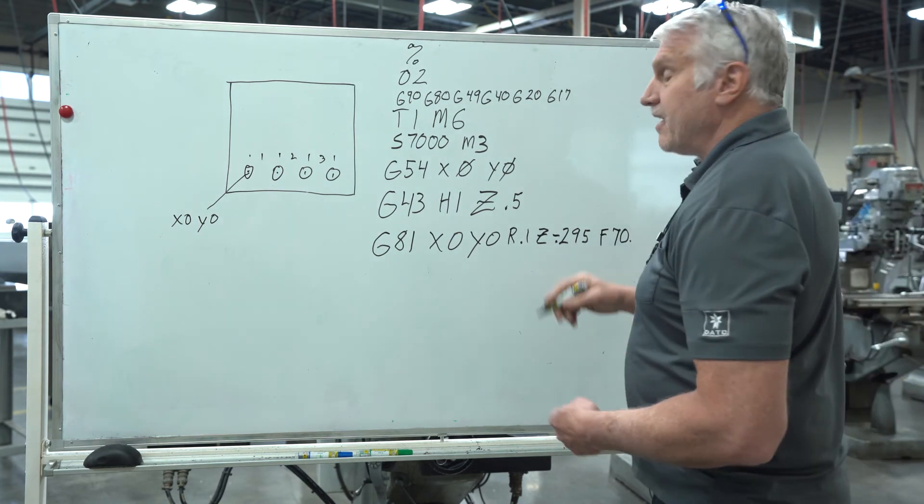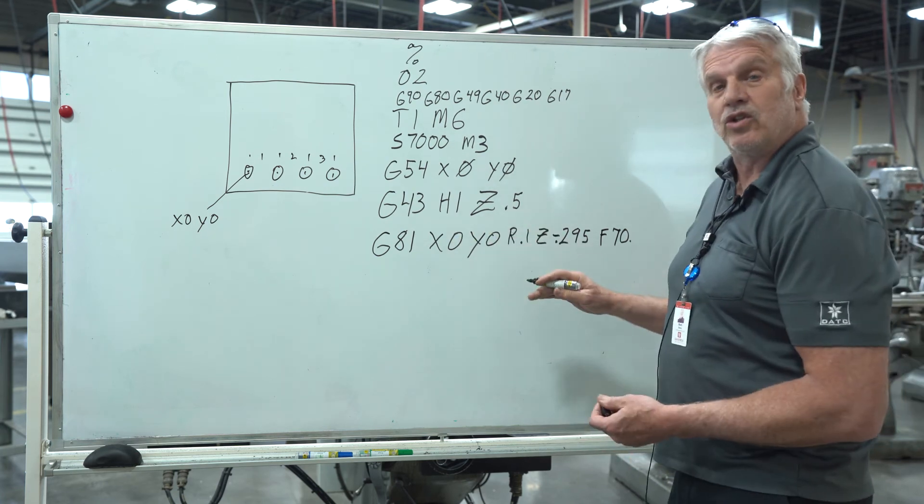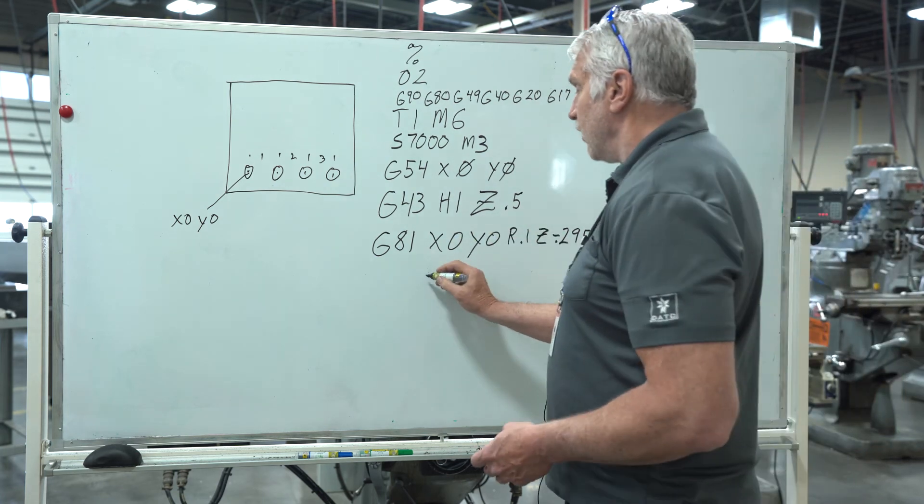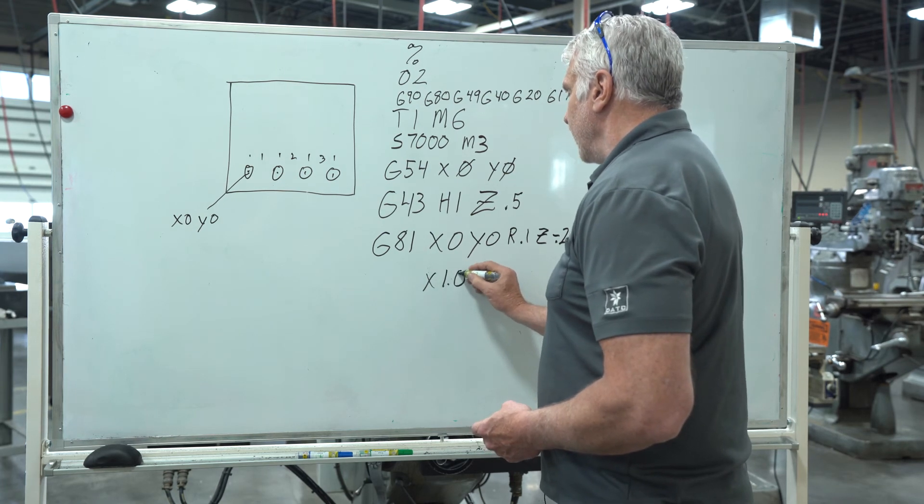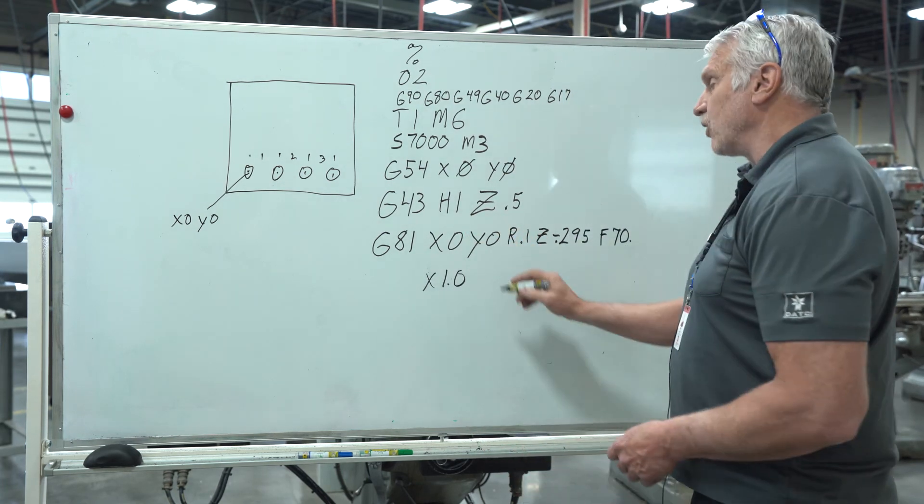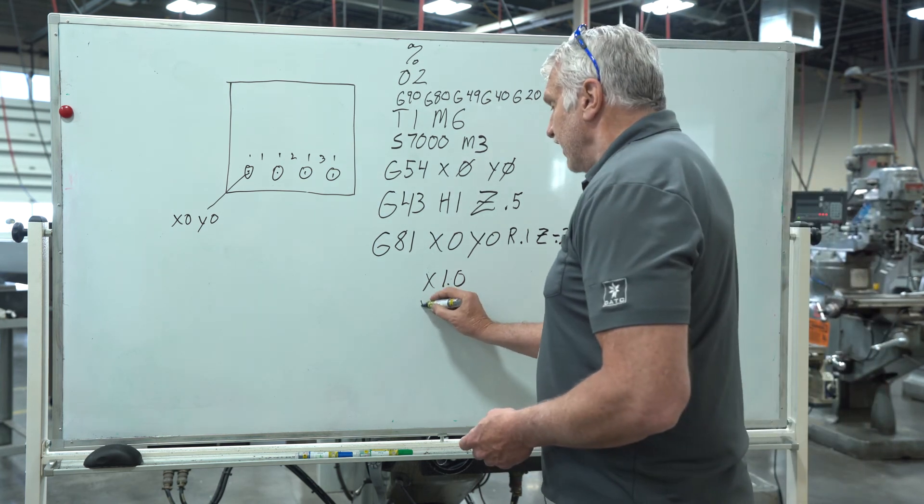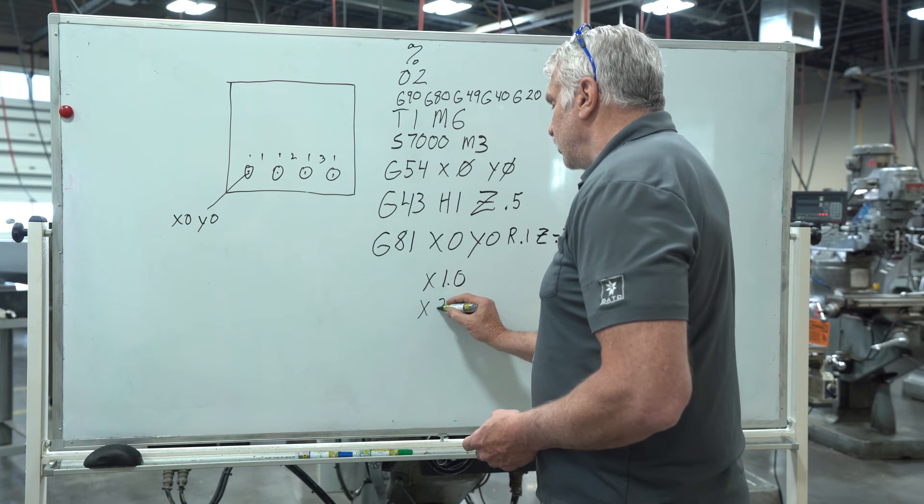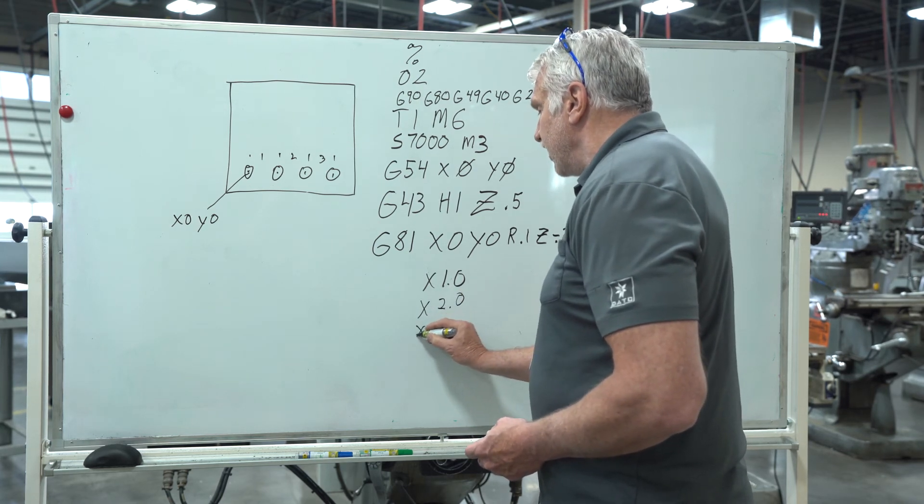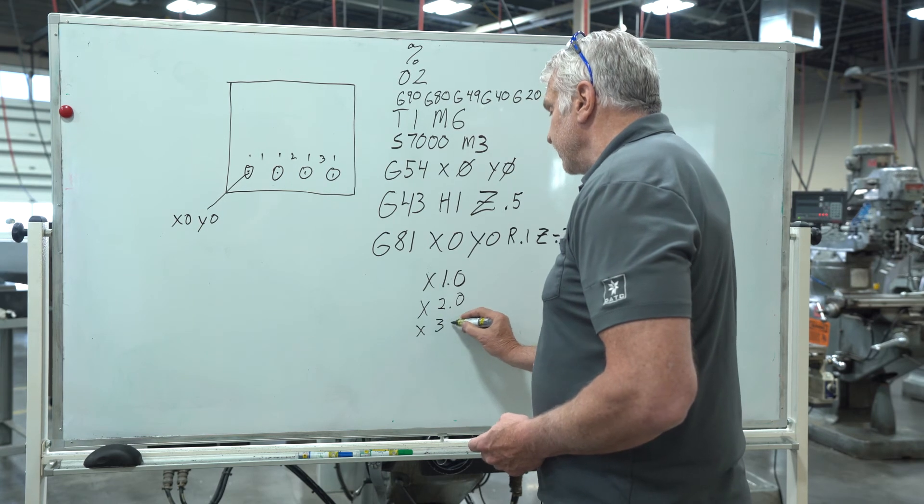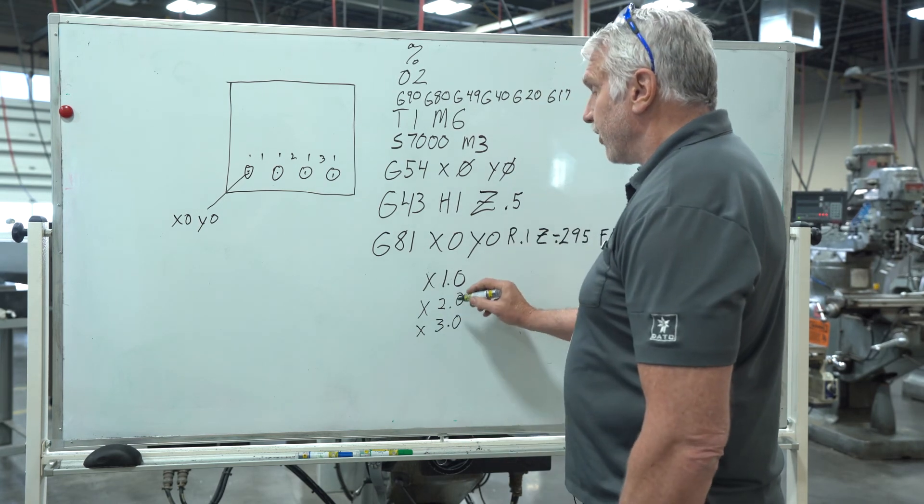Now the beautiful thing about CAN cycles, I don't have to write all these things for my next hole. I just have to tell it where it's going to go next. It's going to go to X of one inch. The Y hasn't changed. I could write a Y in there but I don't need to. The next hole is at X two inches over. The next one is X three inches over. So now I'm going to have my first hole, second hole, third hole, fourth hole.